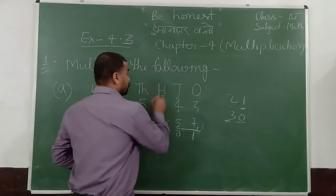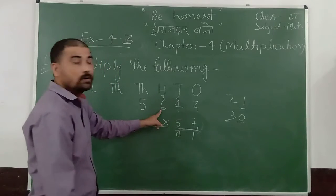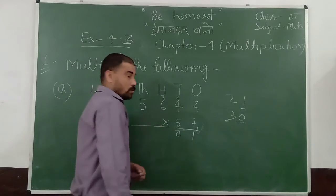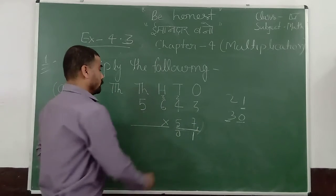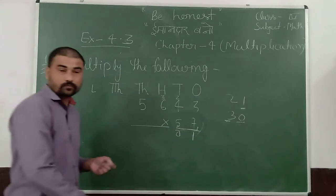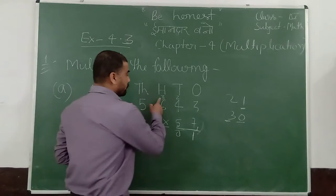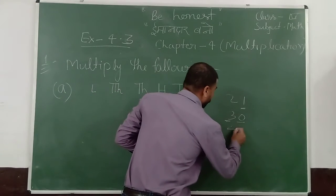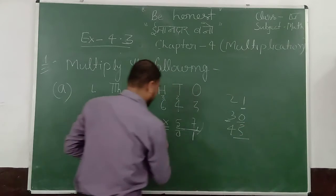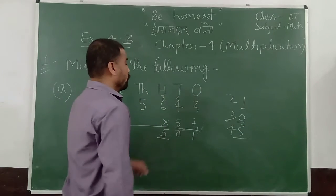Carry 3. 7 into 6, 42. So 42 plus 3, 45. So put 5 here. And 4 is carry.